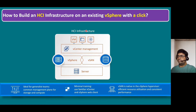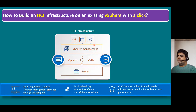Within this hyper-converged infrastructure solution, we combine the server with storage and can configure not only virtual machines, but also cloud-native and containerized applications. For containerized application orchestration, we use enterprise-grade Kubernetes — the Tanzu Kubernetes Cluster. The main key benefits include being ideal for generalist teams, a common management plane for storage and compute via vCenter Server, and minimal training — a vSphere administrator needs only minimal additional understanding using the familiar vCenter Server and vSphere web client. vSAN is a native feature in the vSphere hypervisor, providing efficient resource utilization and consistent performance.